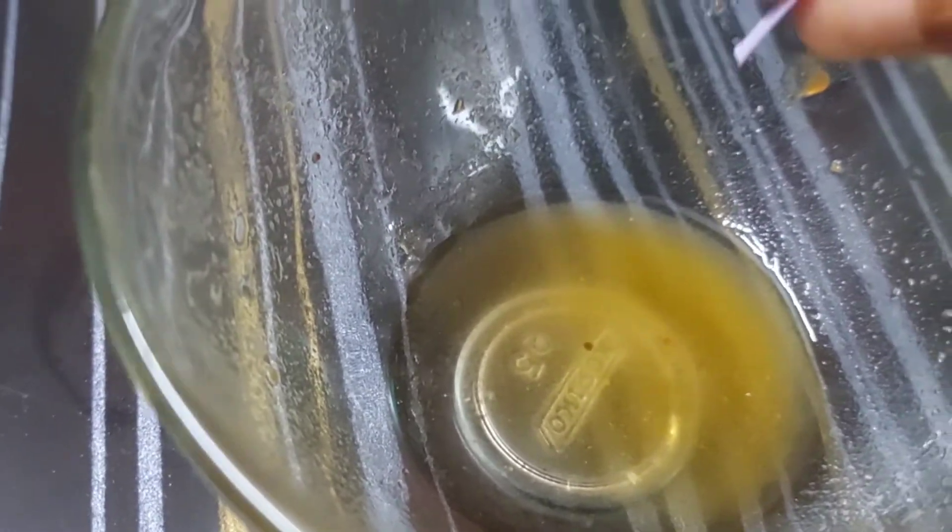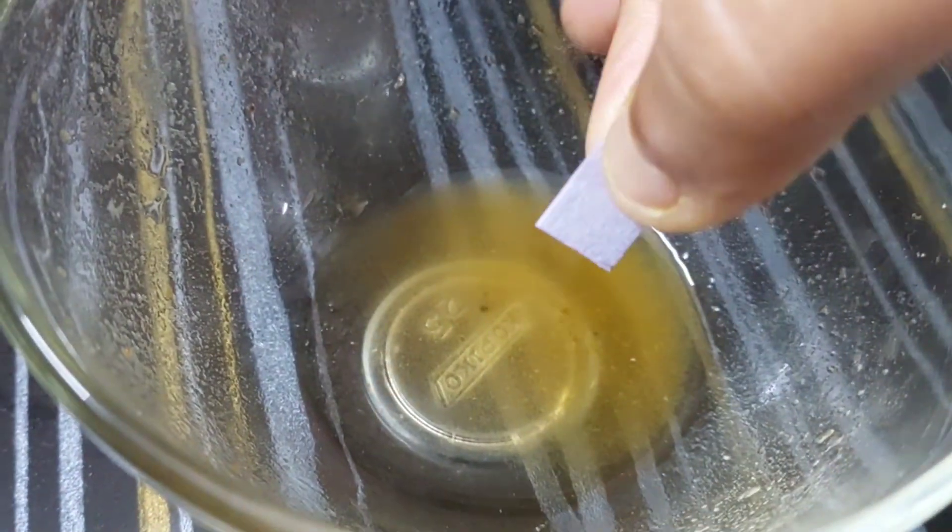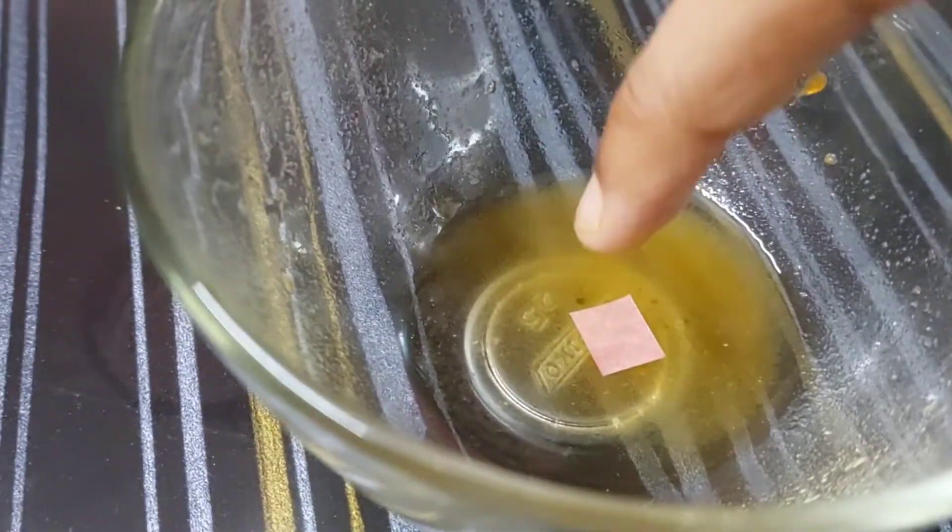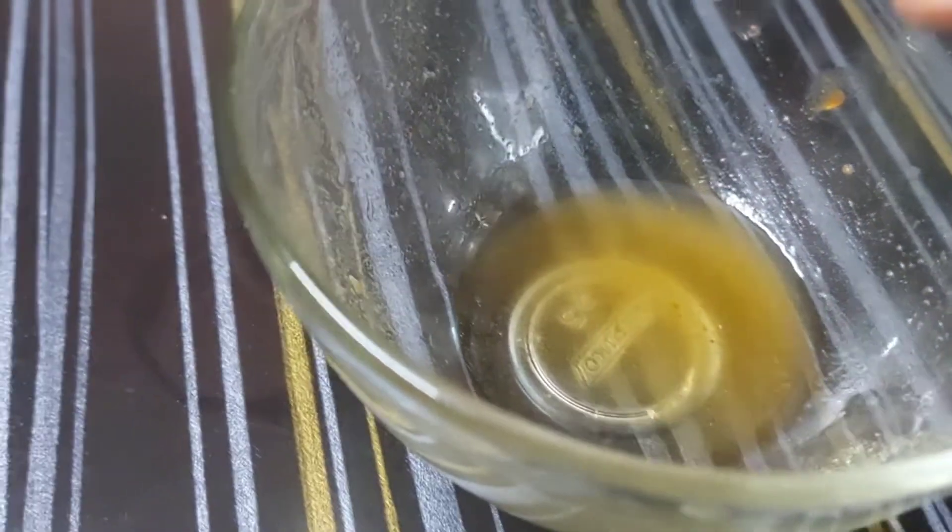Now we have tamarind water. We'll put blue litmus paper into this solution. Here you can see it is converted into red litmus paper, which means it is acidic in nature.